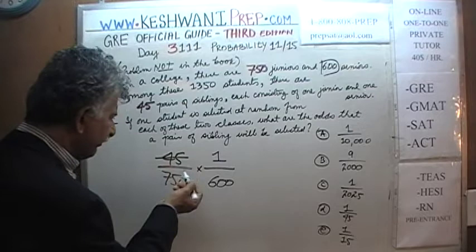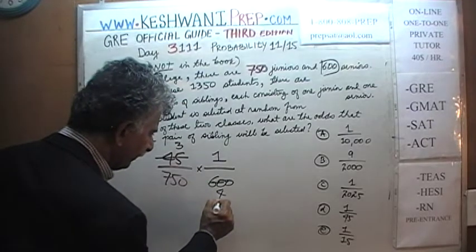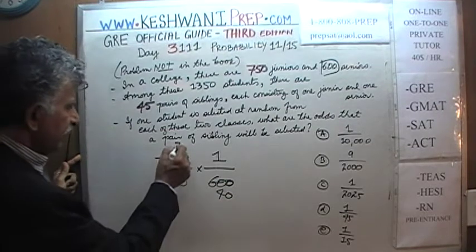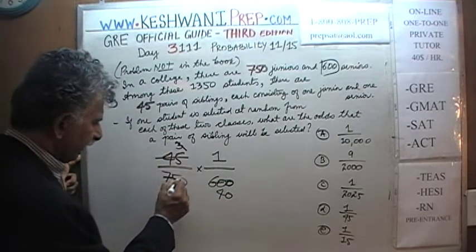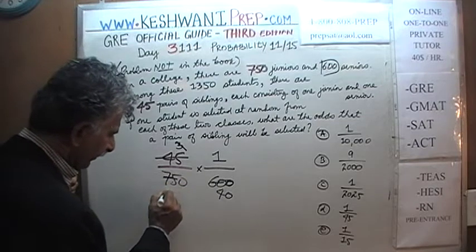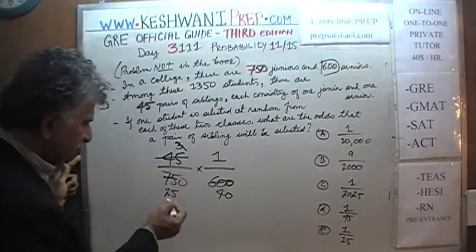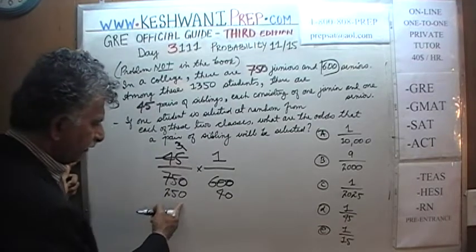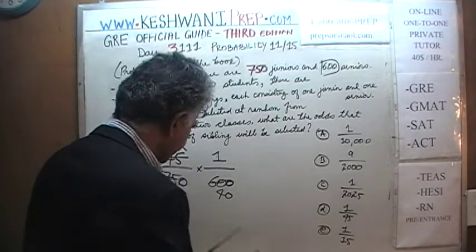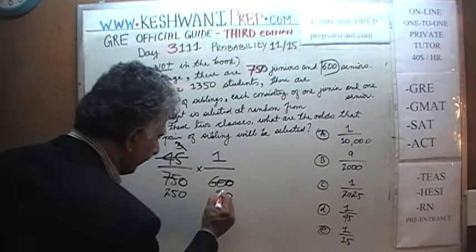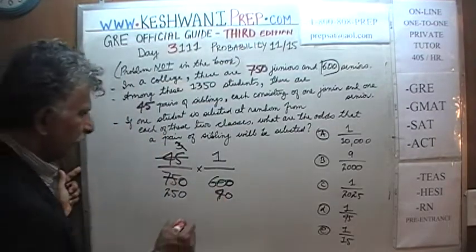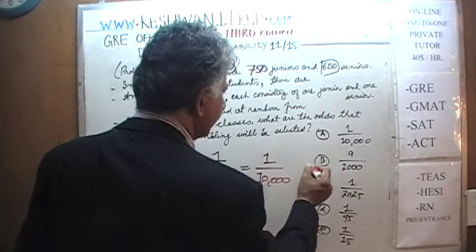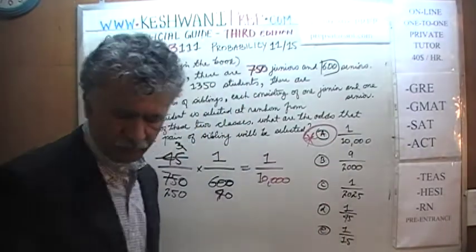We just have to simplify. 45 is made up of 3 fifteens, and 600 is made up of 4 fifteens, giving 40. There is a 3 here and a 75 here — 25 times 3 is 75 — and the 0 comes down. So 250 times 4 would have been 1,000. It simplifies to 1 out of 10,000, and that's all there is.